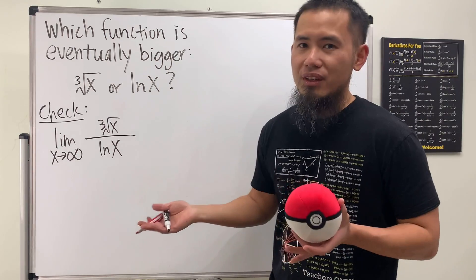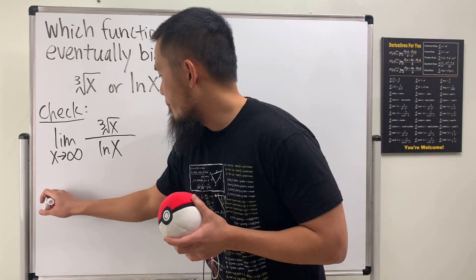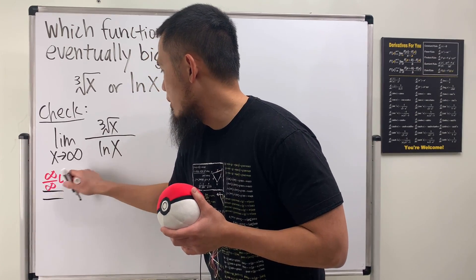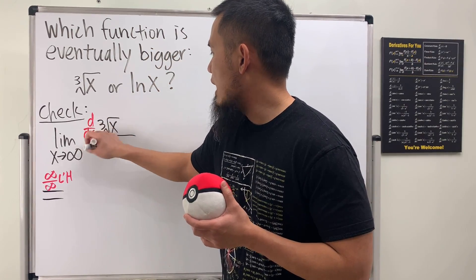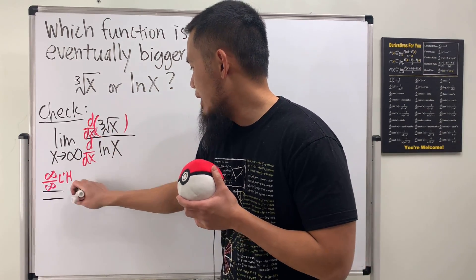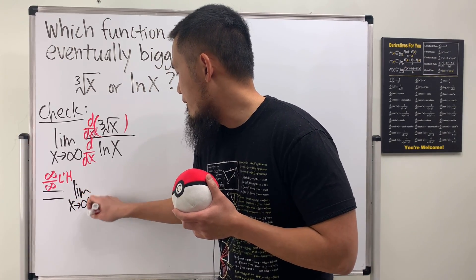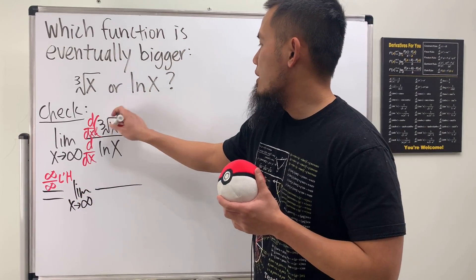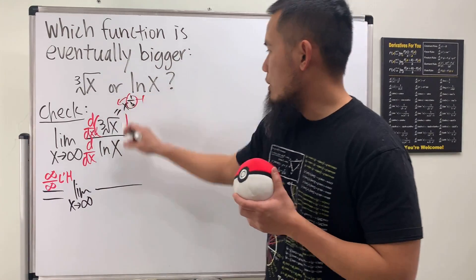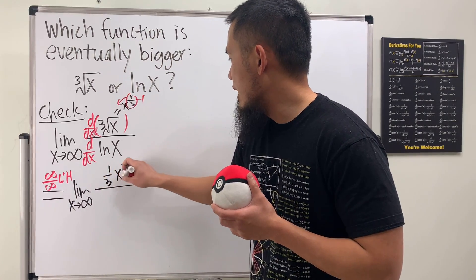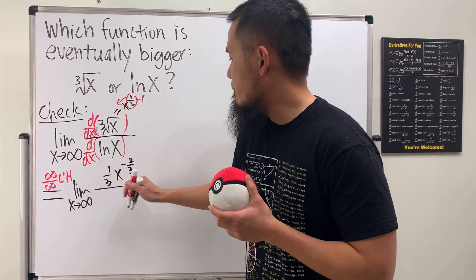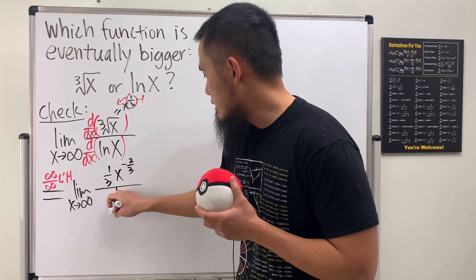This is the infinity over infinity situation, so we get to use L'Hôpital's rule. Let's go ahead and take the derivative of the numerator and the derivative of the denominator. For the numerator, we look at this as x to the one-third power, apply the power rule — bring the exponent forward and subtract one — giving us one-third times x to the negative two-thirds. For the denominator, the derivative of natural log of x is just one over x.